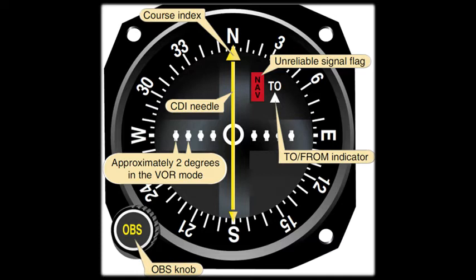This window right here is the TO or FROM indicator flag. If it displays as TO, then you are flying towards the VOR station. If it displays FROM, then the aircraft is flying away from the VOR station. The window can also show a red flag. If the red flag pops up, this means you are in an area of ambiguity or the VOR signal cannot be relied upon.